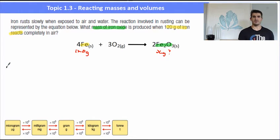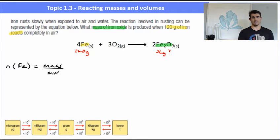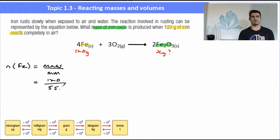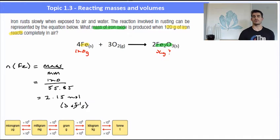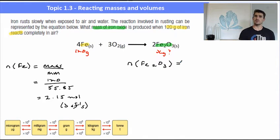So the process: we start off by finding the number of moles of the thing that we know. The mass of iron is 120, so using the formula mass over molar mass, we have 120 over the molar mass of iron, 55.85, which gives us the number of moles of iron. Now to work out the number of moles of Fe2O3 — that's the thing we need to find the mass of — this is where we use the mole ratio. The number of moles of the thing that you want, its coefficient, which is 2, divided by the coefficient of the thing that you've been given, which in this case is 4.